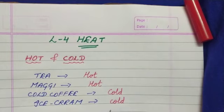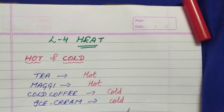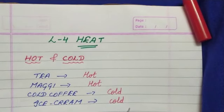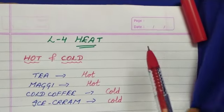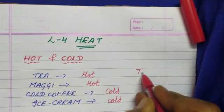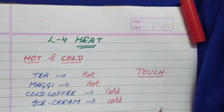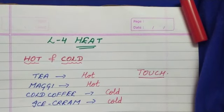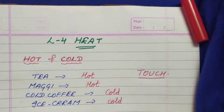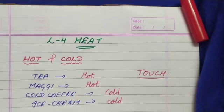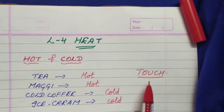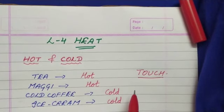Now how do you tell whether a substance is hot or cold? Usually what do we do? We touch it. Usually we touch an object and we can tell whether an object is hot or cold. But is your sense of touch always reliable? Can you always rely on touching and seeing whether an object is hot or cold?